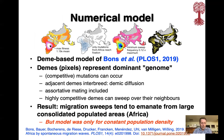Several things can happen in the model: mutations — typically competitive mutations — can occur. Adjacent DEAMs can interbreed, giving us demic diffusion. We have included assortative mating, and we also have a situation where highly competitive DEAMs can sweep over their neighbors.